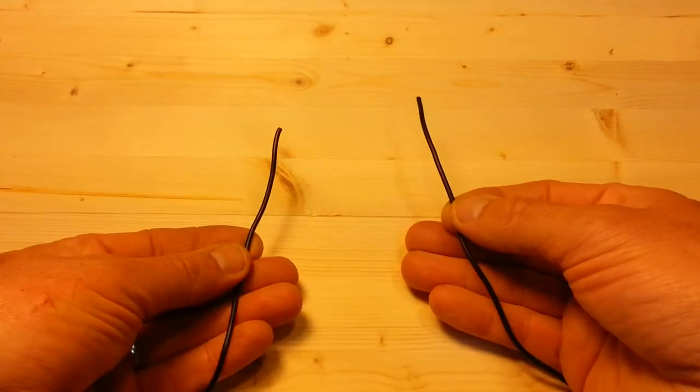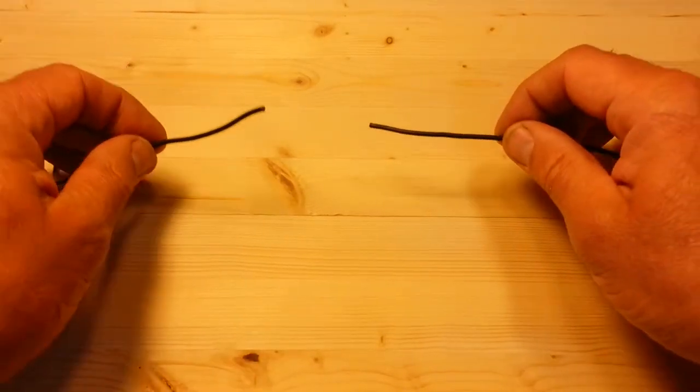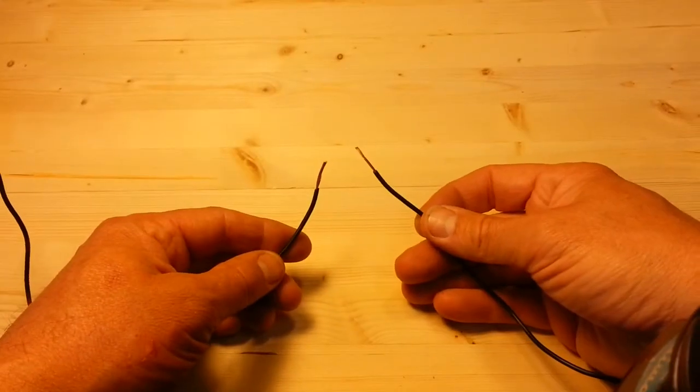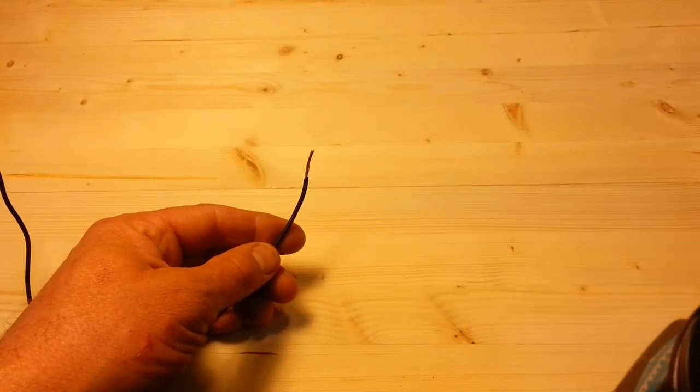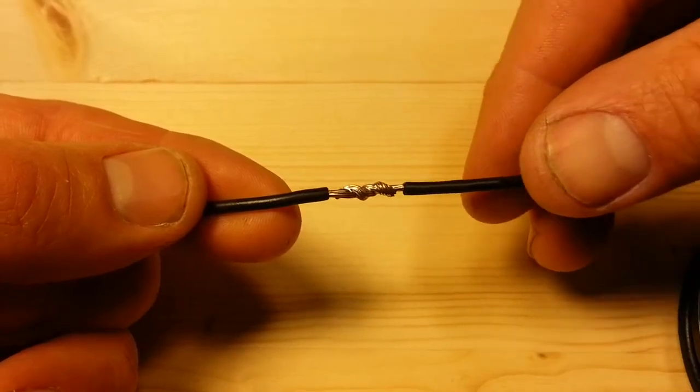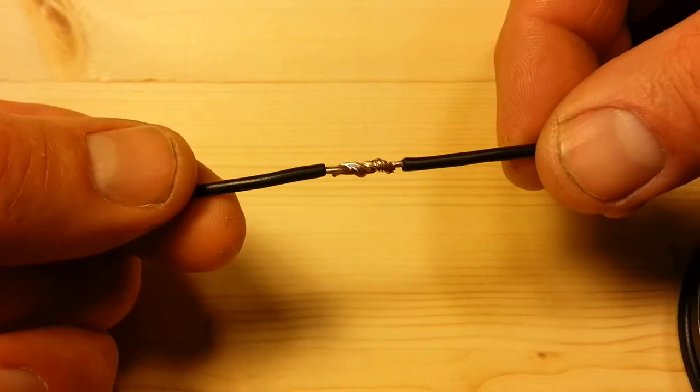So maybe you've never soldered two wires together before. Well don't worry, it's not that hard. Basically, the term soldering is simply to lock and seal an electrical connection together using melted tin or tin-lead coating.